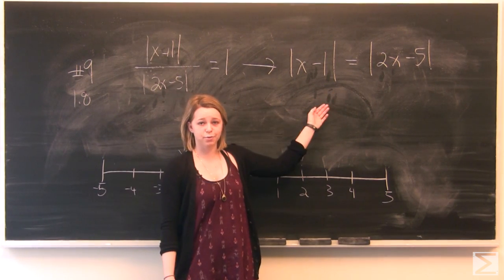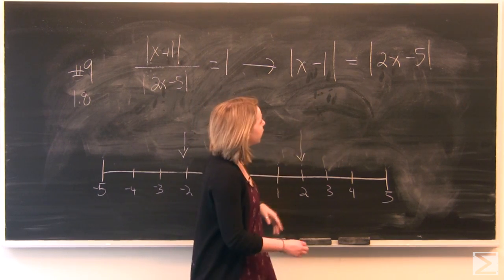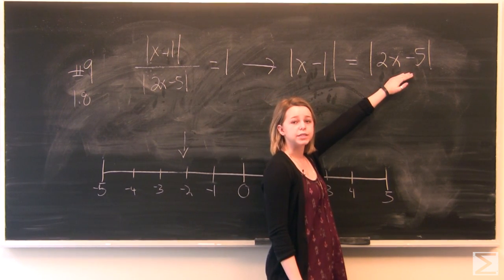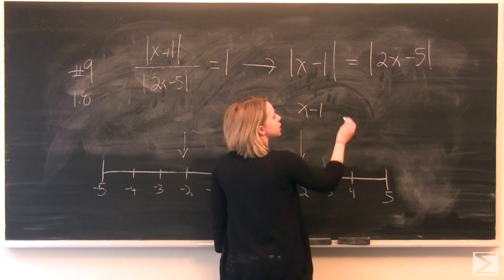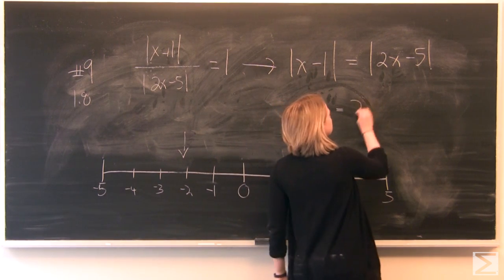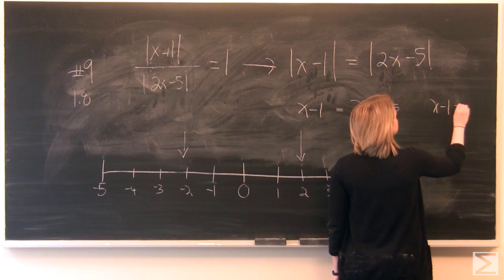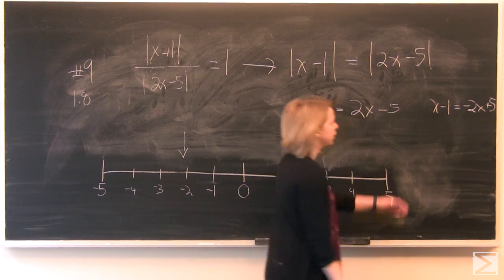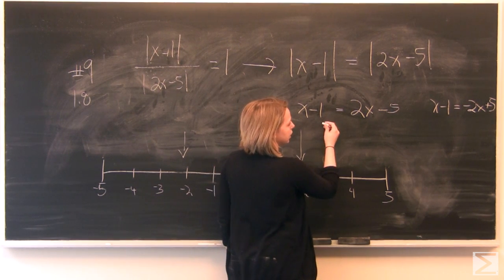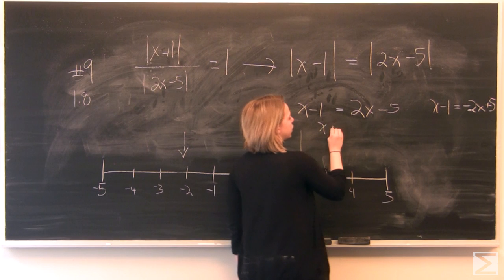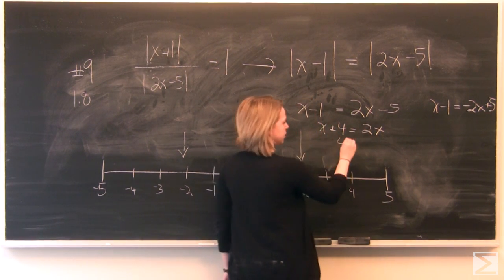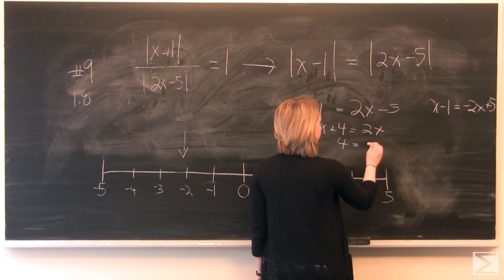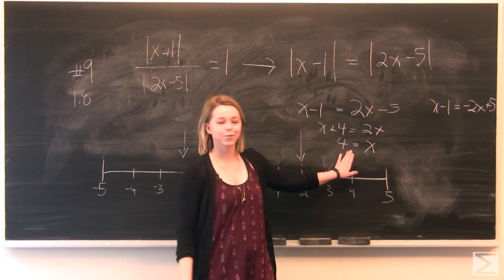Here we have absolute value on either side, which we haven't seen before. But it isn't scary — we're just looking for an x that makes x minus 1 equal to that many units away from 0. So x minus 1 equals the positive version, 2x minus 5, or x minus 1 equals the negative version, negative 2x plus 5. Solving the first equation: adding 5 to both sides gives x plus 4 equals 2x, and subtracting x from both sides gives x equals 4.